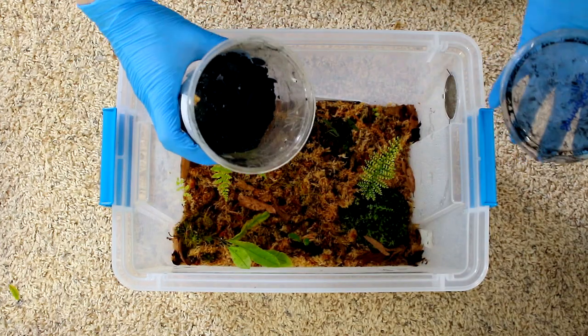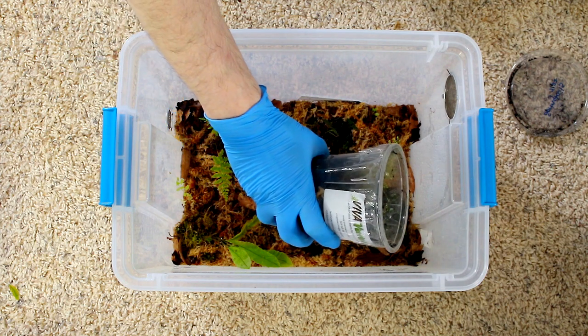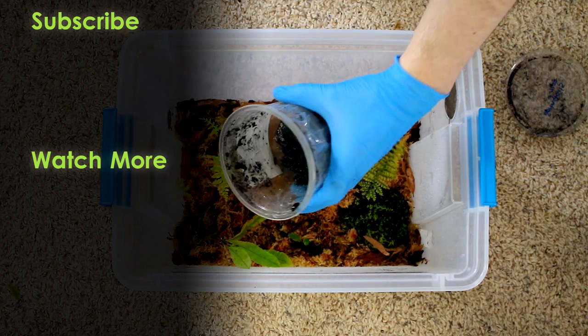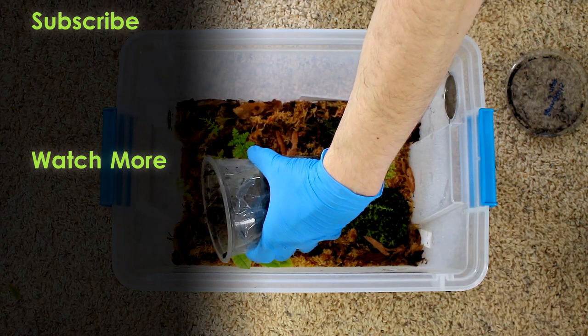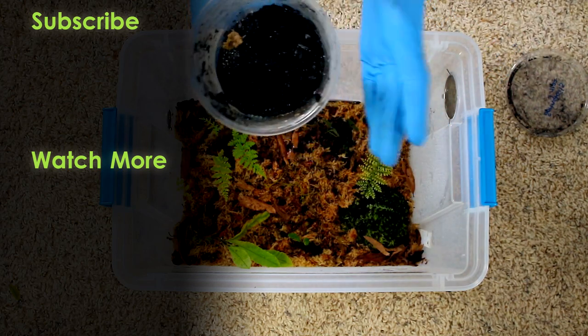When you want to add some springtails to your terraria or plant bins, you're going to carefully pour some water out of the culture into the plant container or terrarium and the springs will float out on the surface. After a few small pours or one larger pour, you're going to want to replace some of that lost water.